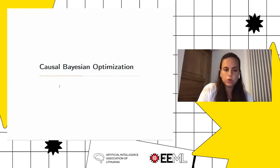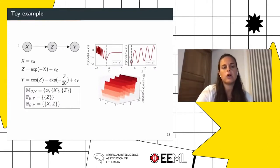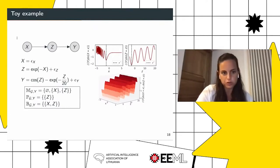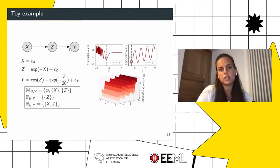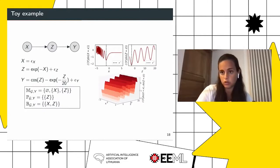Let's look at causal Bayesian optimization through a specific toy example. We have X, Z, and Y — all variables are observed, with no non-manipulative variables and no unobserved confounders — and we have a specific structural equation model. The first thing to notice is that Y is independent of X given Z, so an intervention on X and Z leads to the same result as an intervention on Z alone. This is the kind of interventional invariance I was speaking about — we don't need to explore X and Z jointly, but can consider either an intervention on X or on Z.